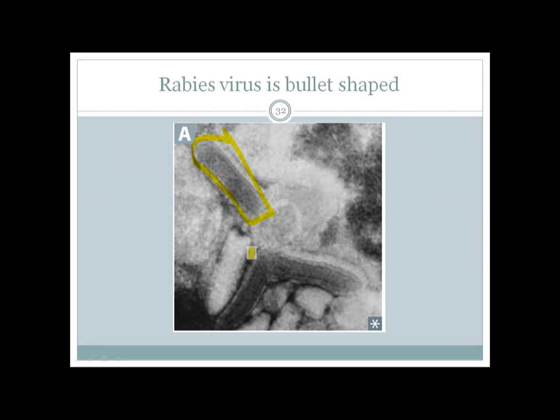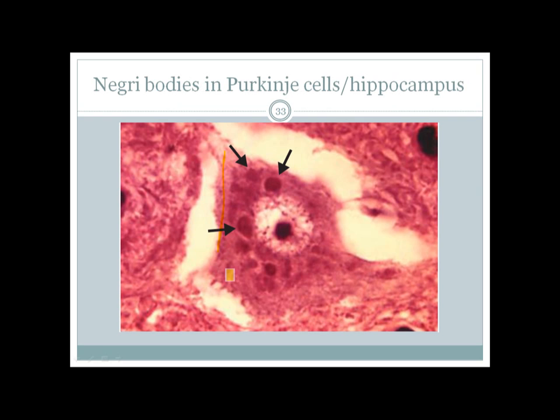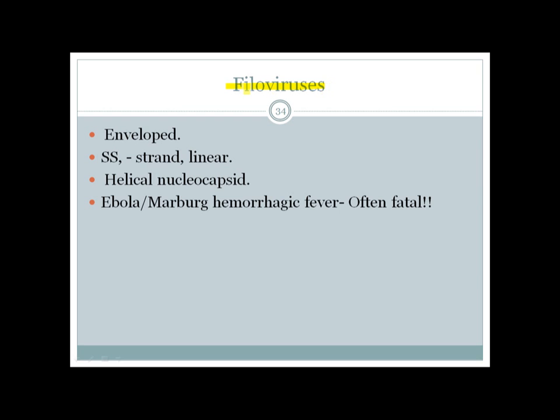Images show the bullet-shaped Rabies virus and neurons — possibly in Purkinje cells or hippocampus — with intranuclear inclusions representing Negri bodies found in the CNS.